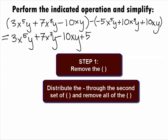When we distribute the negative and change the sign of every term in the second parentheses, we get plus 5x to the 5th y minus 10x cubed y minus 10xy.